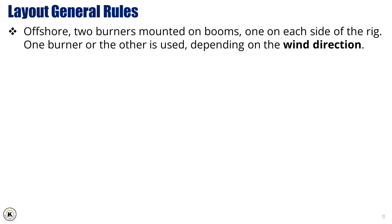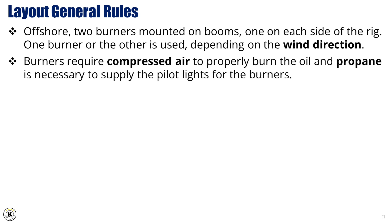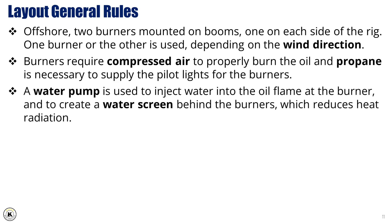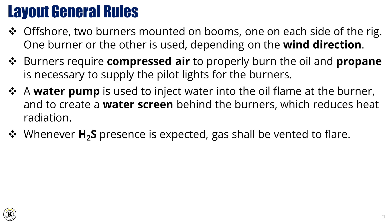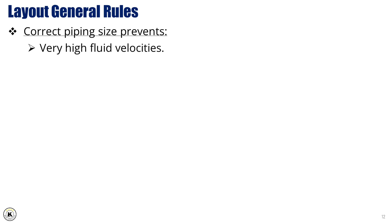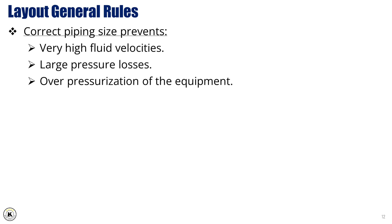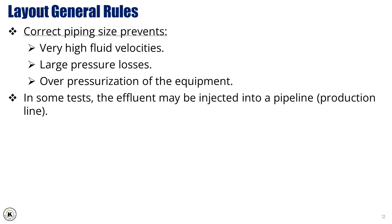Offshore, two burners are mounted on booms, one on each side of the rig. One burner or the other is used depending on the wind direction. Burners require compressed air to properly burn the oil, and propane is necessary to supply the pilot lights for the burners. A water pump is used to inject water into the oil flame at the burner and to create a water screen behind the burners, which reduces heat radiation. Whenever H2S presence is expected, gas shall be vented to flare. Correct piping size prevents very high fluid velocities, large pressure losses, and over-pressurization of the equipment. In some tests, the effluent may be injected into a pipeline or production line.